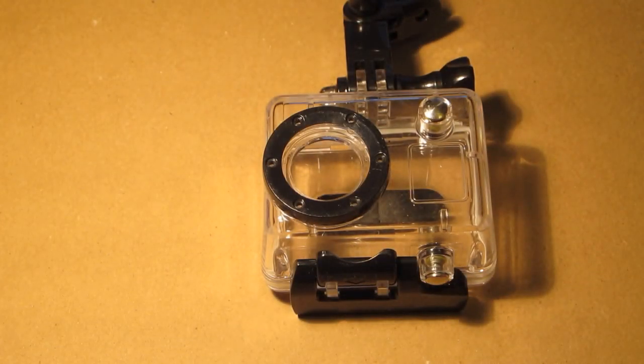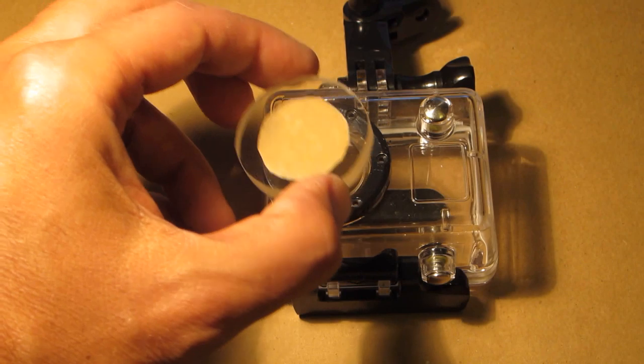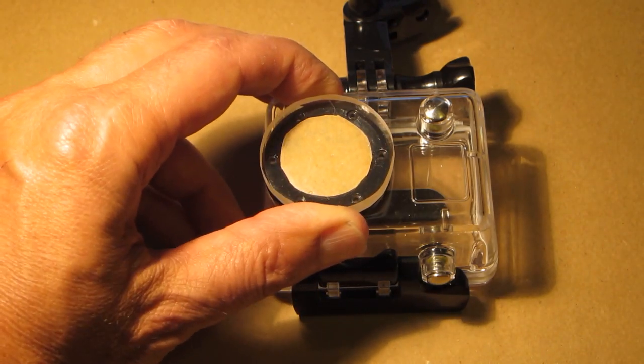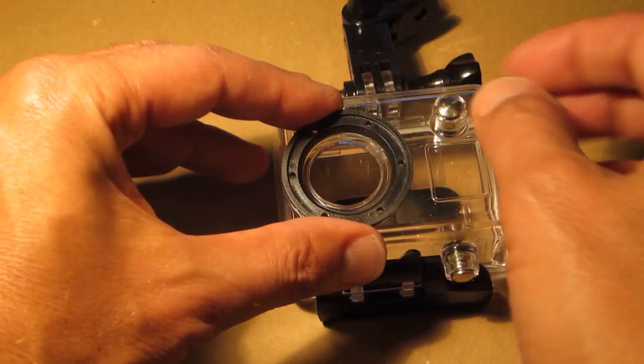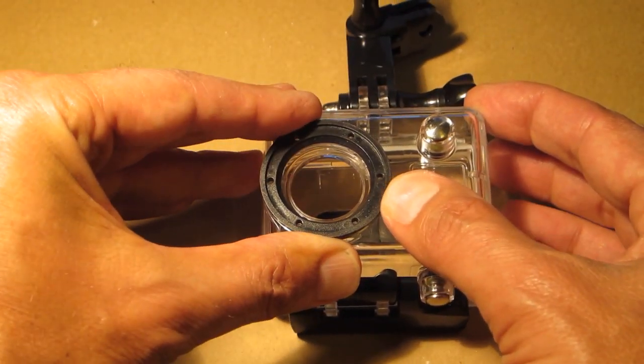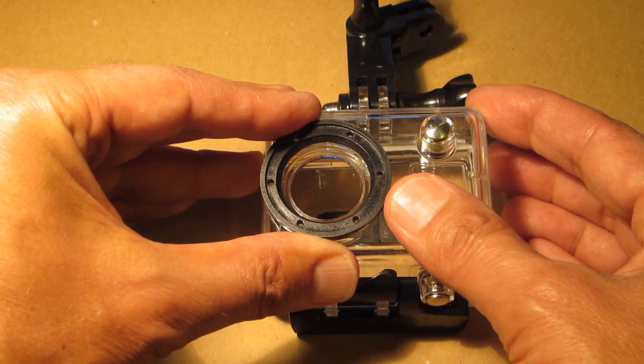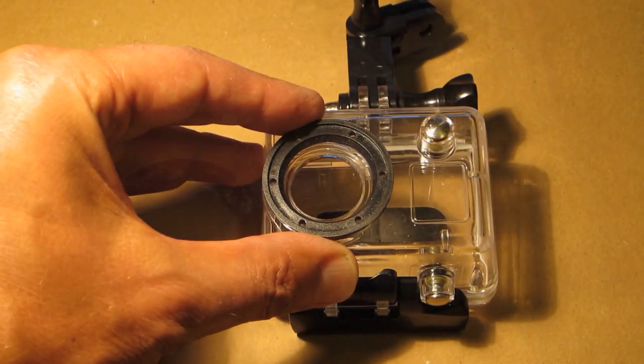With the ring right side up, if you put the plexiglass flat lens, it will touch the lens of the camera. So what you need to do is to put silicone around here and then attach this using the screws upside down. And this will move it far enough away so it doesn't touch the camera lens.